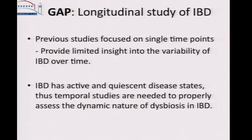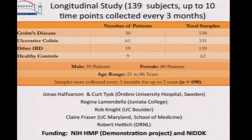A gap in the twin study was that it looked at single time points, which provides limited insight — especially for IBD where you can have flare-up, remission, and drug therapy occurring over time. IBD has active and quiescent disease states, so it's really important to have a temporal study to properly assess IBD. More recently we did a longitudinal study with 139 subjects, with up to 10 time points collected every three months. During that time, we have from our clinical collaborators information about remission, drug therapy, et cetera.